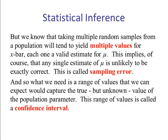This implies, of course, that any single estimate of mu is unlikely to be exactly correct. This is known as sampling error.